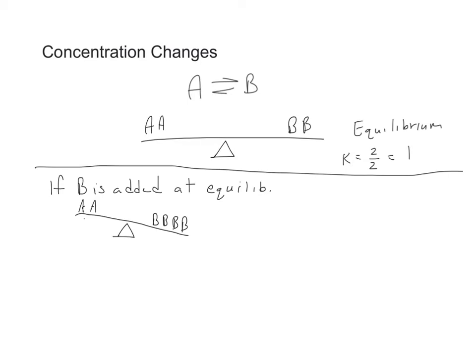If we think about what we know about a seesaw, we know if one side is heavier than the other, then it's not flat anymore—it's out of balance. So let's say I'm going to add some B to my system at equilibrium, which has an equilibrium constant of 1. With too much B, the seesaw is out of balance. Le Chatelier's principle says the system will react to go back to equilibrium, so the reaction has to go in the reverse direction, where B is converted to more A.